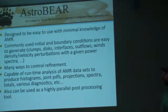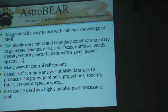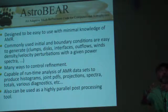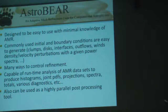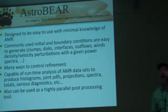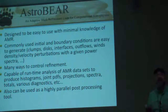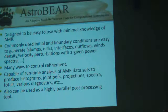So what is AstroBear? The code was designed to be easy to use with minimal knowledge of adaptive mesh refinement — you don't have to go into the AMR parts of the code to get it to work. Commonly used initial and boundary conditions are easy to generate. We use an idea of objects, so if you want to put a disk with a wind inside, we have objects you can place easily into the grid. You can refine on density gradients, on magnetic fields, or on places where self-gravity is important — it's easy to control that in AstroBear.